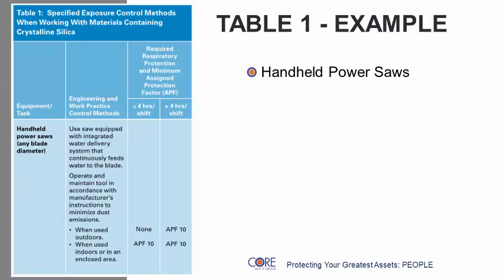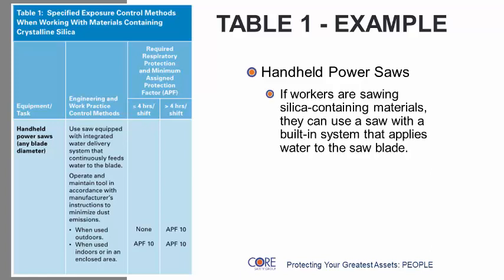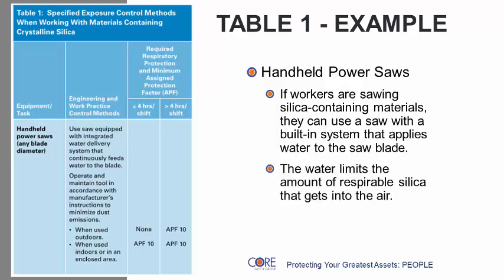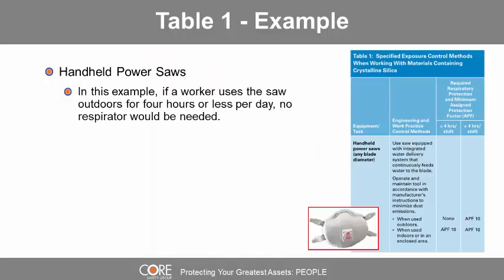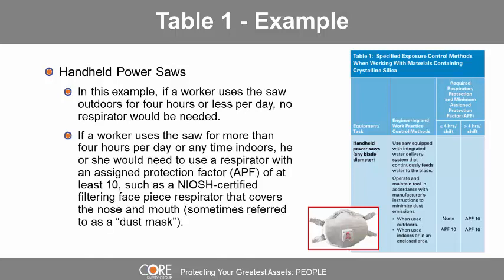As an example from Table 1 for handheld power saws: if workers are sawing silica-containing materials, they can use a saw with a built-in system that applies water to the saw blade. The water limits the amount of respirable silica that gets into the air. If a worker uses the saw outdoors for four hours or less per day, no respirator would be needed.